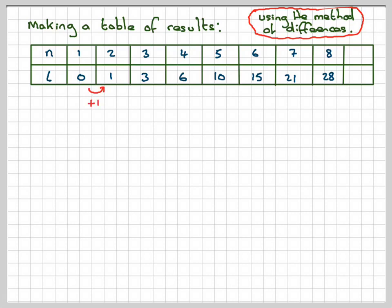So from 0 to 1, we add one. From 1 to 3, we add two. From 3 to 6, we add three. From 6 to 10, we add four. Ten to fifteen, add five. Add six, add seven. And if we were going to do the next one, we'd be adding eight. So we haven't got a difference here, but if we look at the differences of the differences, we just get plus one each time.